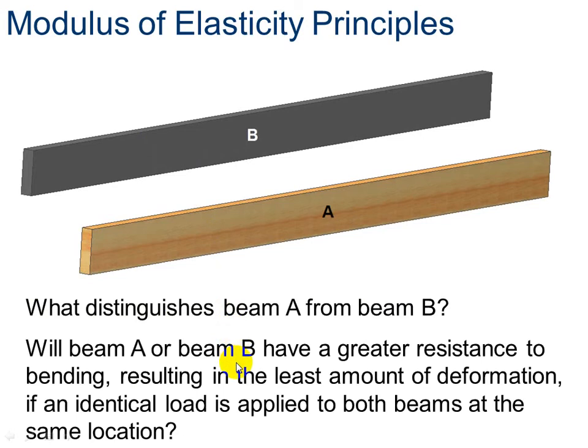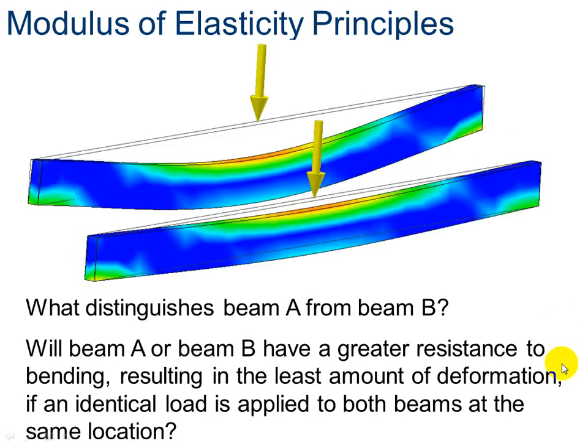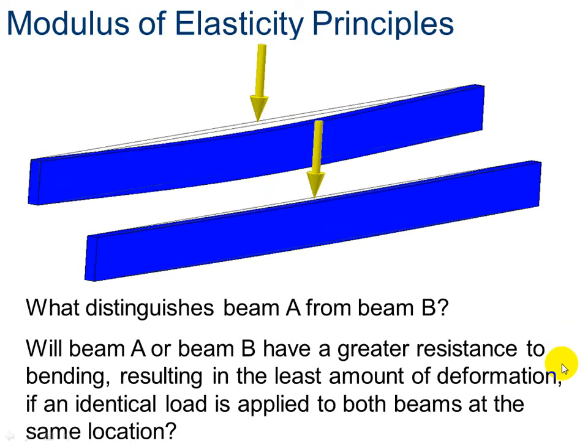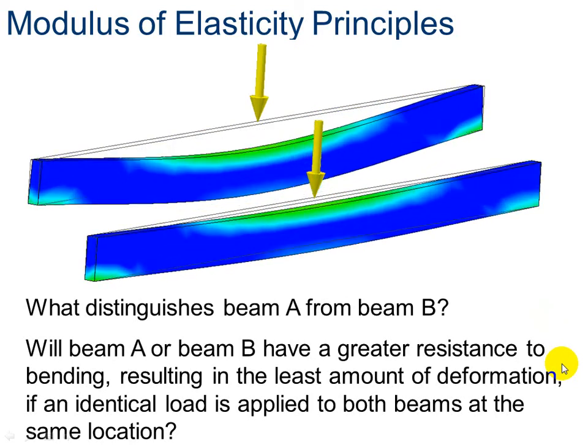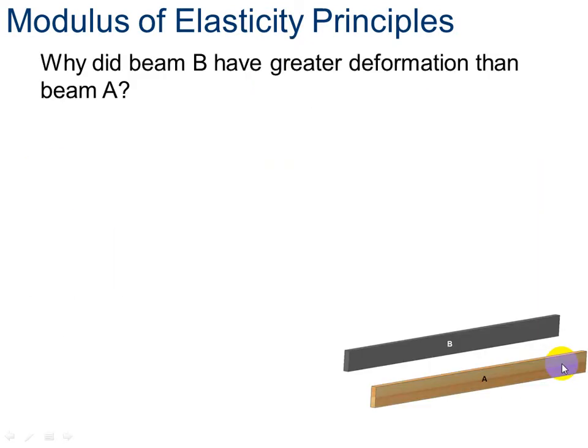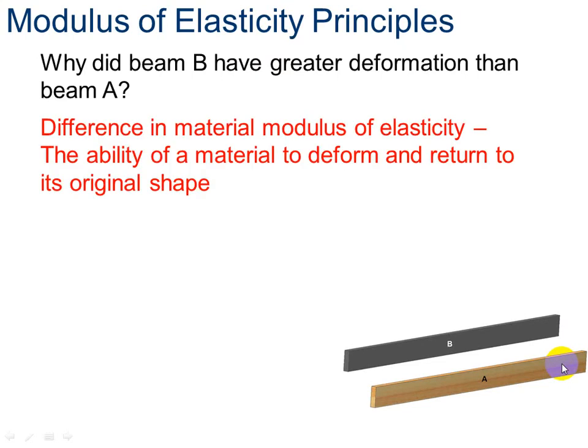So will beam A or beam B have a greater resistance to bending? Do you think Douglas fir or ABS plastic will resist bending more? My guess is A. OK, so let's check this out. Why did B have a greater deformation than A? The difference is in the materials modulus of elasticity. It's the ability of a material to deform and return back to its original shape.